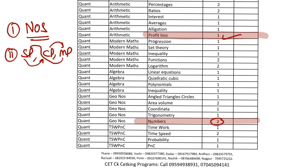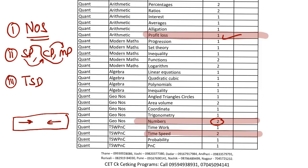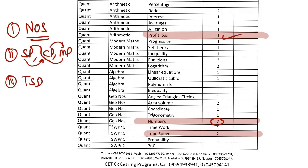Number three on the list is Time Speed Distance. Two cars coming from either side — you can create 100 questions out of this setup alone, with speed, time, and distance all given. There are multiple question types possible, then races, trains, boats — it's a huge topic again. It's impossible to complete.